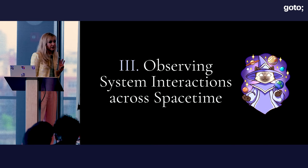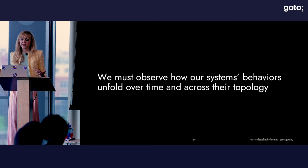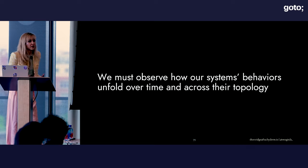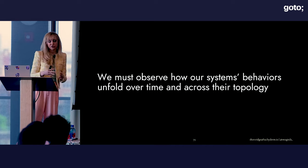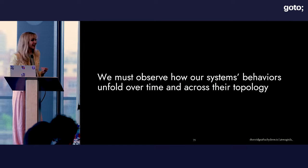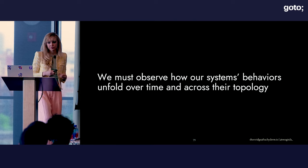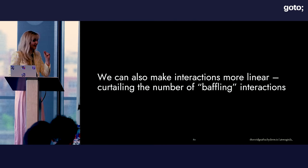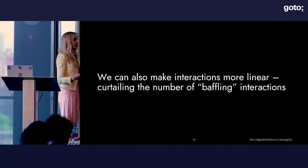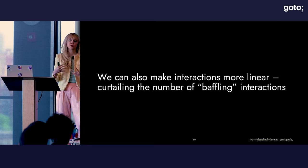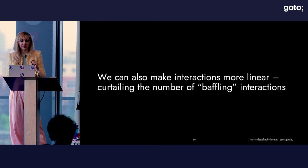That brings us to the third ingredient: observing system interactions across space-time. When we're developing and delivering systems, we can support this observation and form more accurate mental models as our systems' behaviors unfold over time and across the topology of the system. Looking at a single component at a single point in time tells us very little from a resilience perspective. We can also make interactions more linear, which curtails the number of baffling interactions — those surprises that happen. There are practices and patterns we can adopt or avoid to make those interactions more linear.